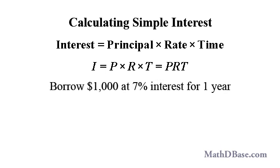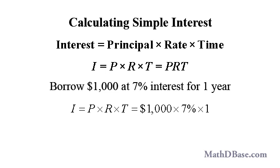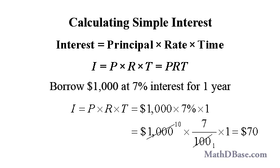Let's take an example. If $1,000 is borrowed at 7% interest for one year, the interest that is due is given by I equals PRT, which is equal to $1,000 times 7% times one year, or $1,000 times 7 over 100. We can reduce by canceling 100, leaving $10 times 7, or $70. So the interest on the loan for that one year is $70.